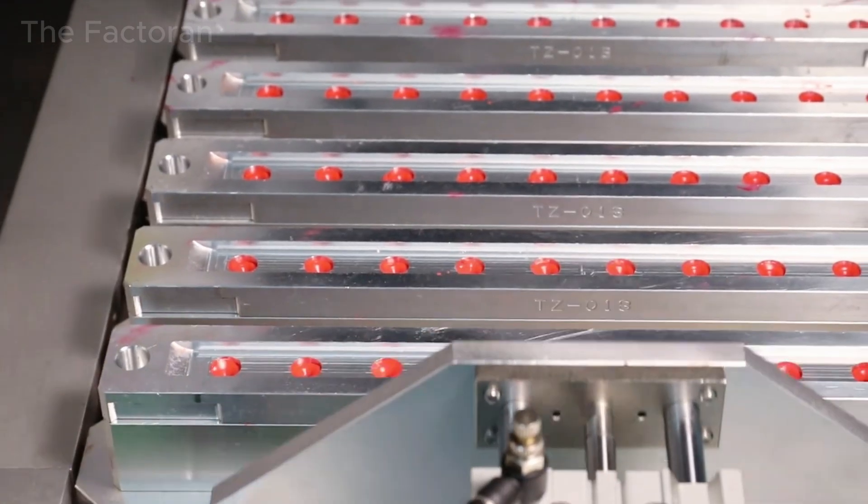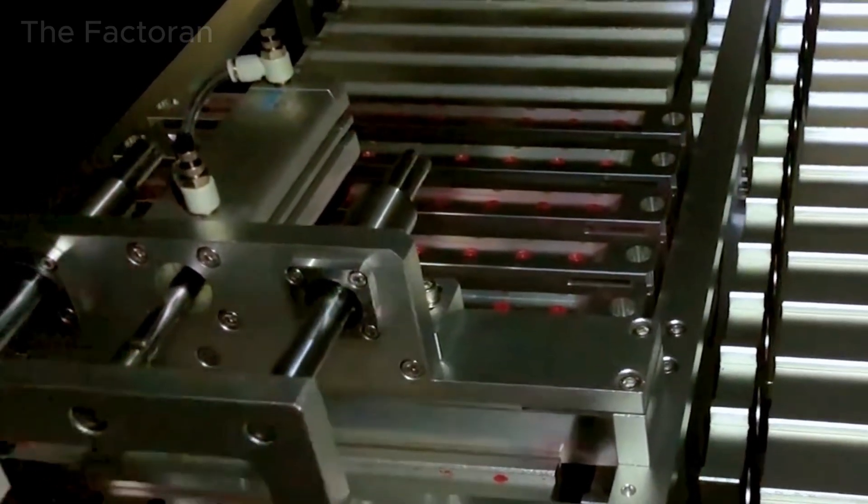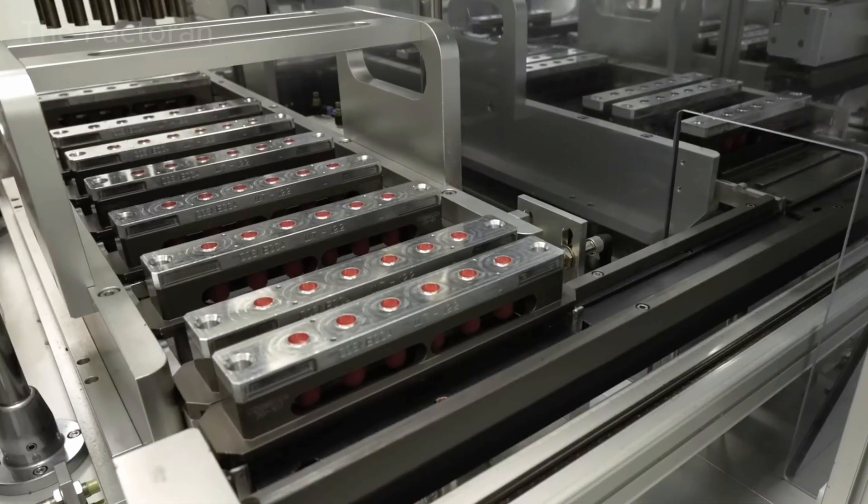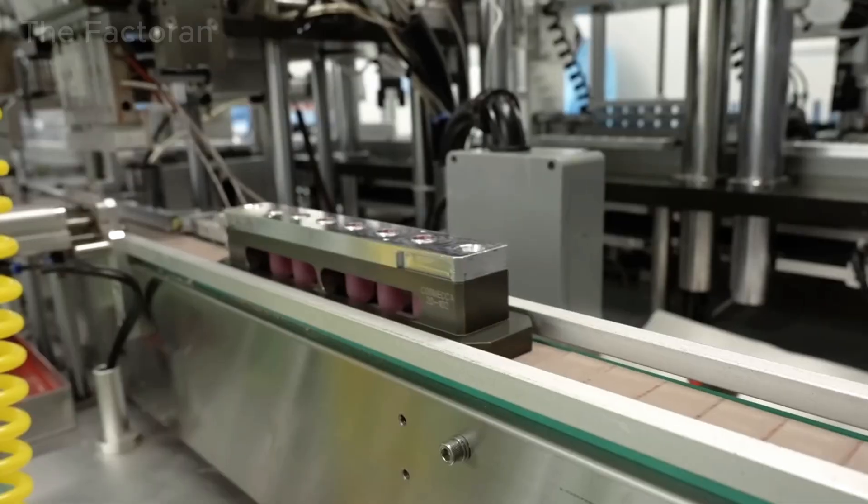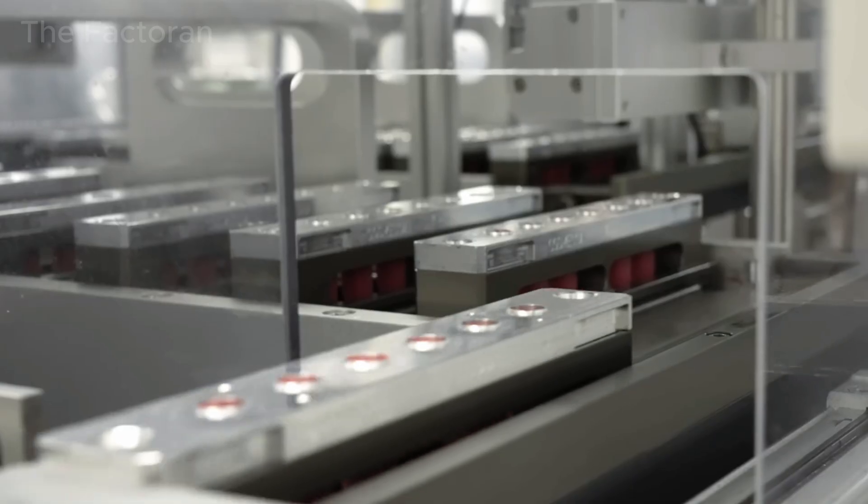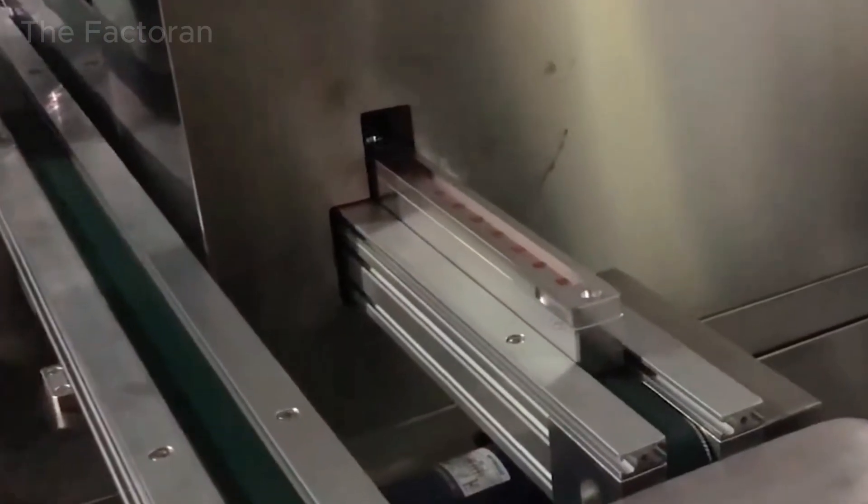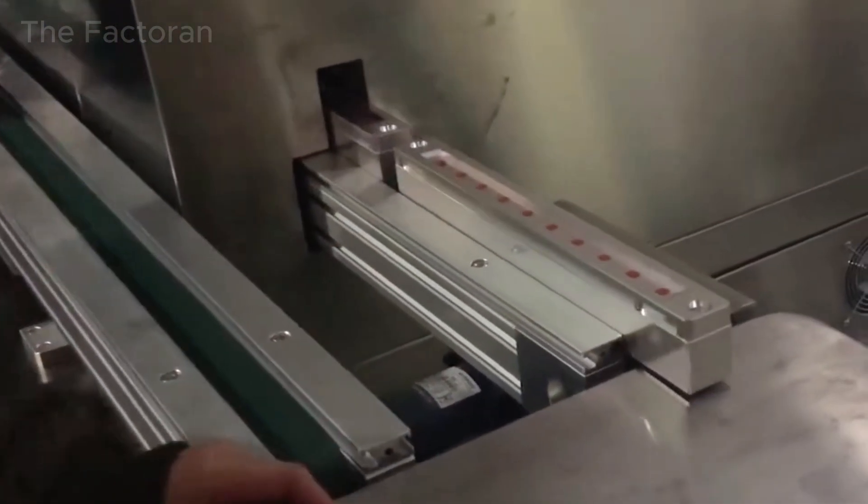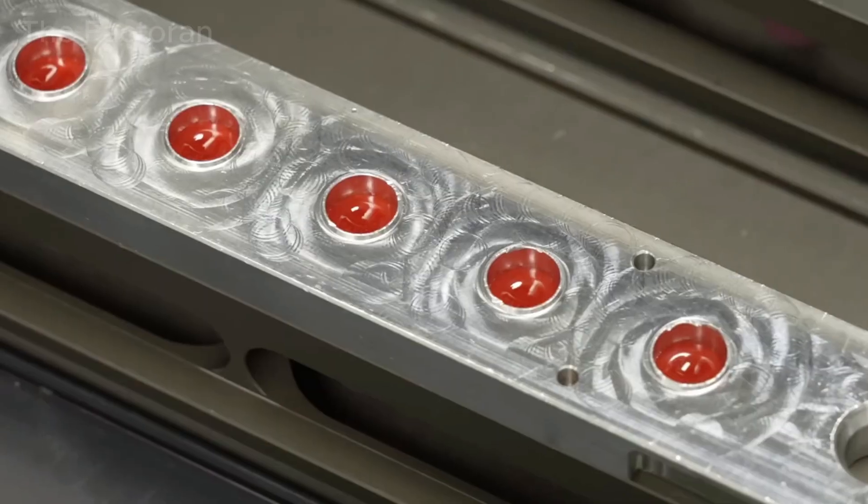Immediately after being filled, the lipstick molds are transferred to the cooling system. Depending on the production line, the molds may be placed in a dedicated cooling area or carried on a conveyor through a closed cooling tunnel, measuring approximately 5 feet in length.